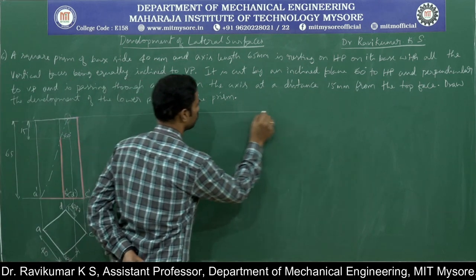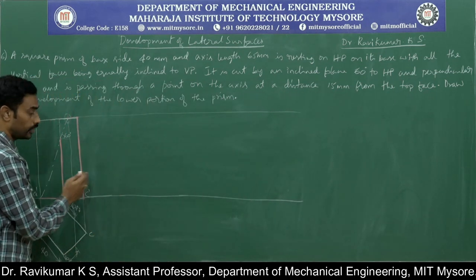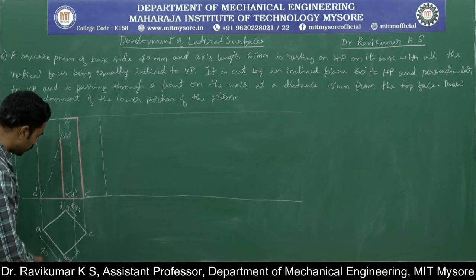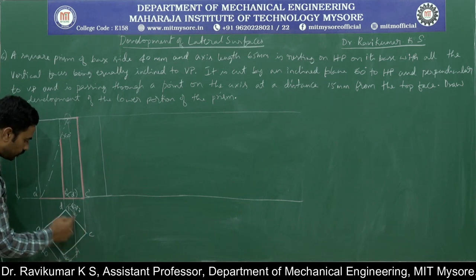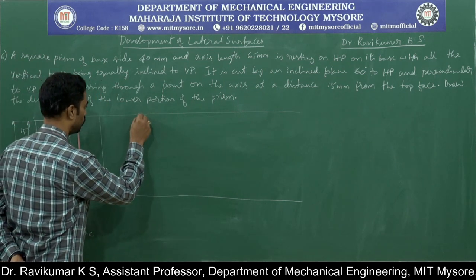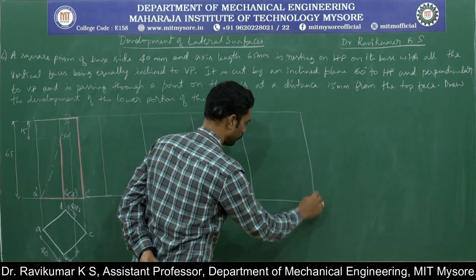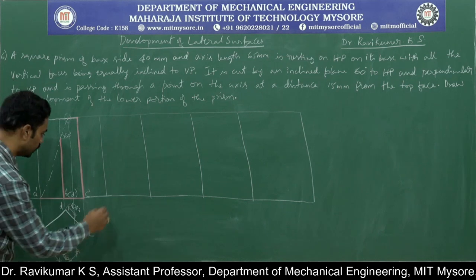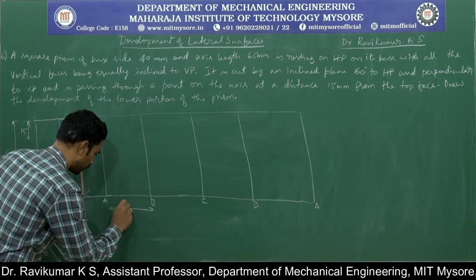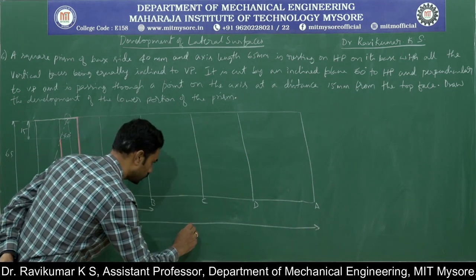We will start the development now using the parallel line method. Keep a convenient distance between the front view and the development. Since it is a square prism, it has 4 sides all equal to 40mm. So divide the development line into 4 lateral edges: 40, 40, 40, 40. Name them A, B, C, D, and A again. The total width is 40 × 4 = 160mm.